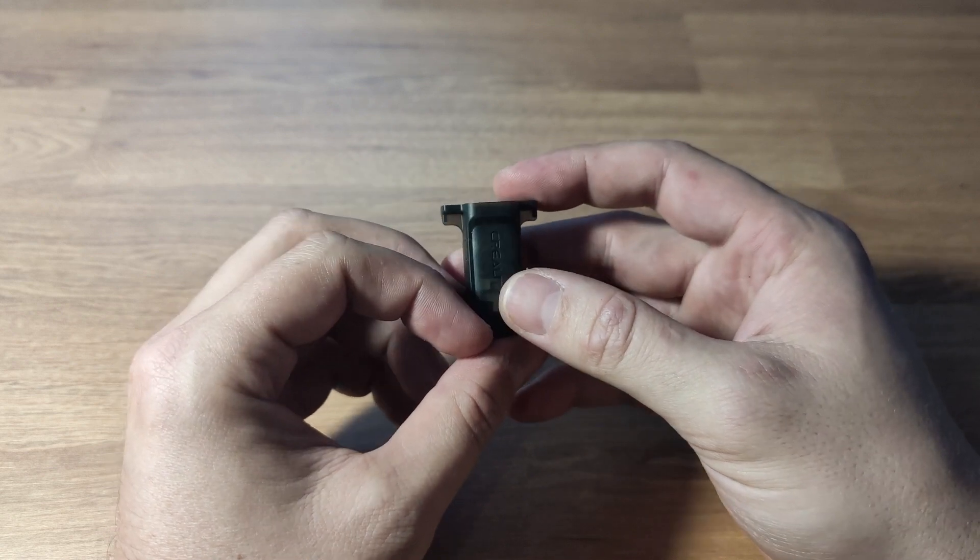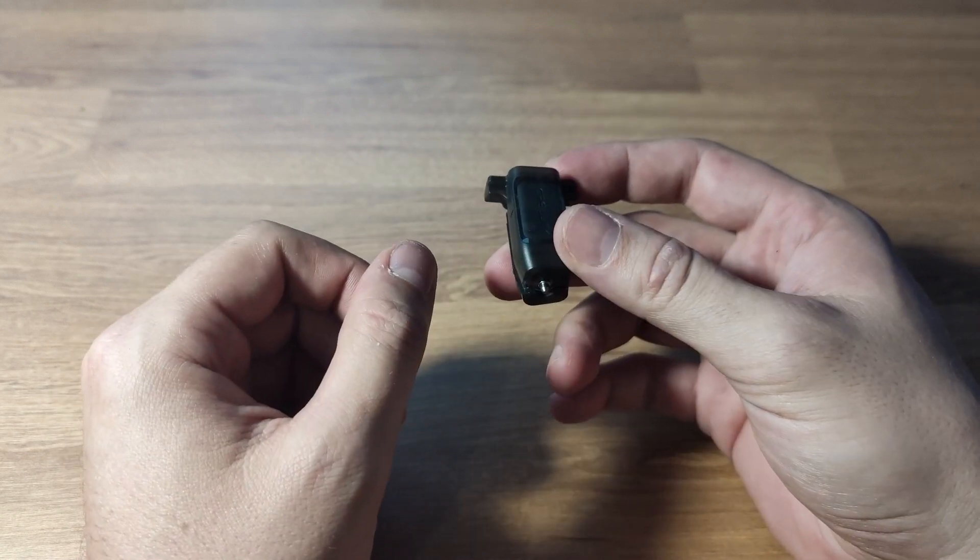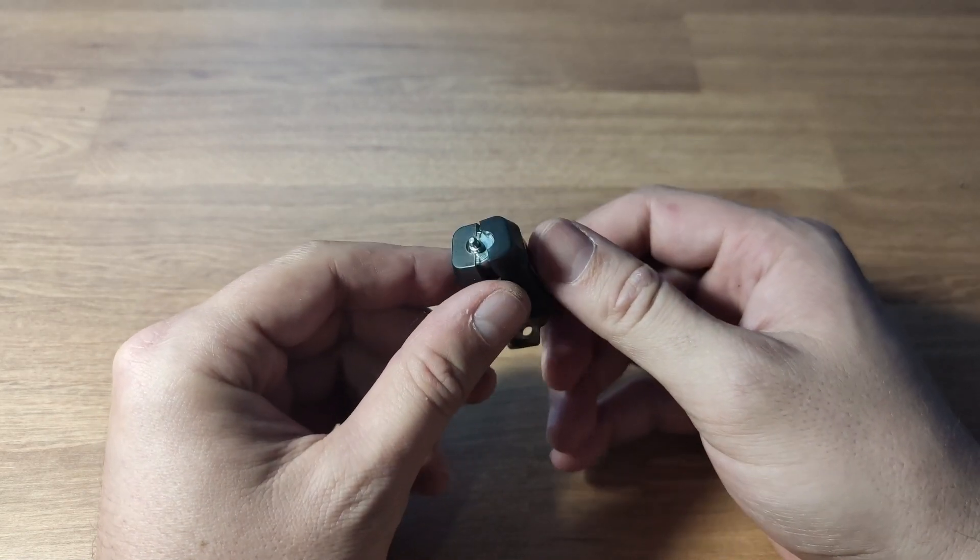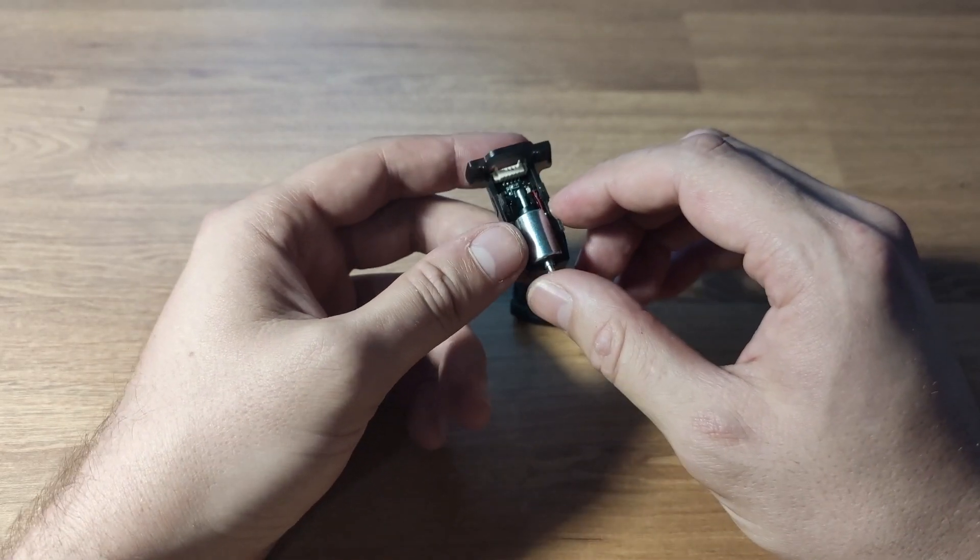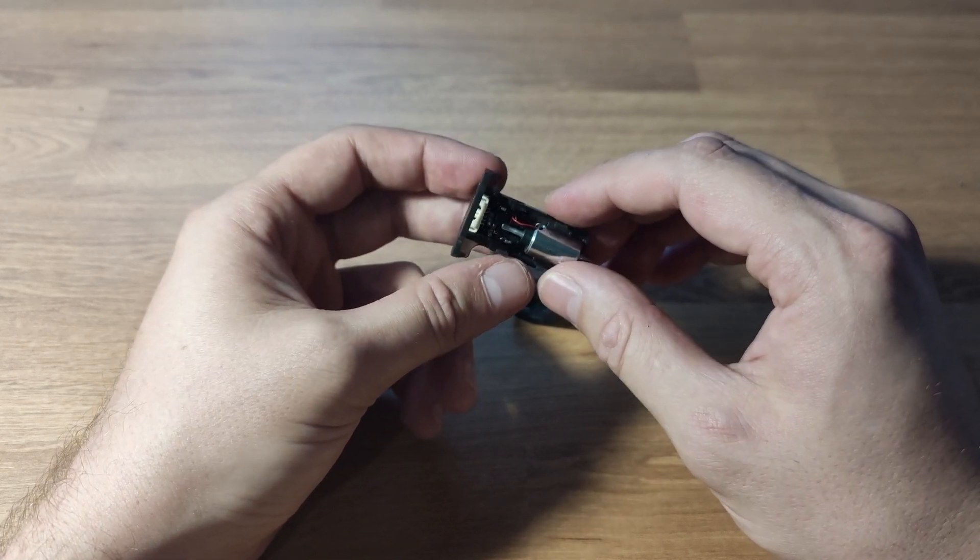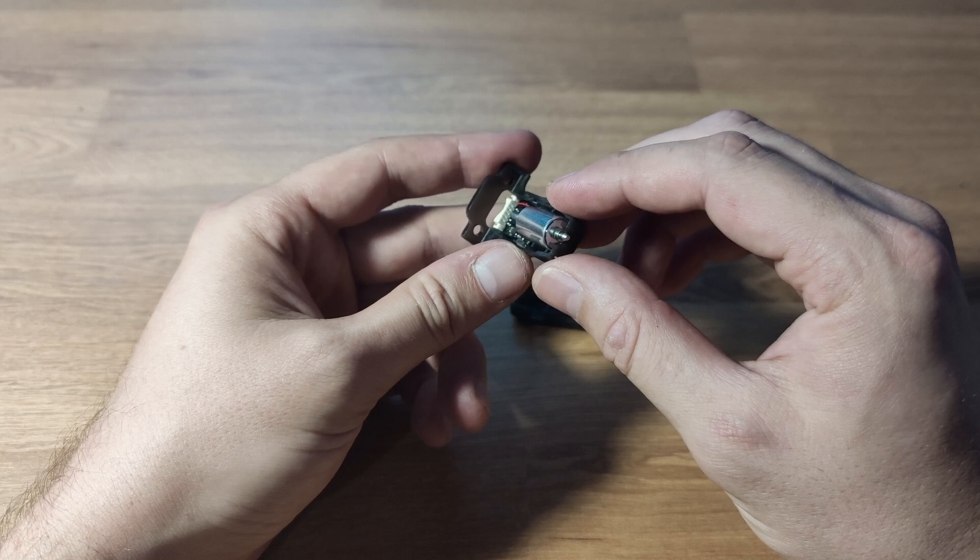So your CR touch is flashing red. I'm sorry to say that probably means that your pin has become bent. To be honest, you're probably looking at needing a complete replacement because this is a precision instrument.